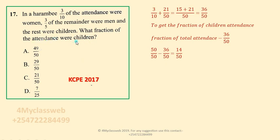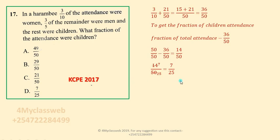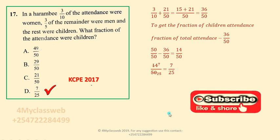This fraction can be simplified: 14 divided by 2 gives 7, and 50 divided by 2 gives 25. So when simplified, the fraction gives you 7 out of 25, which is the fraction for the children. From the choices, this is given as choice D. Thank you very much — you can continue subscribing to this channel, click like, and share this information with other people.